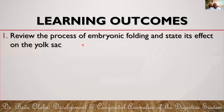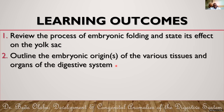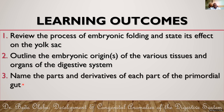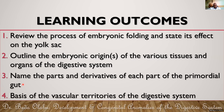Our learning outcomes for this class are: to review the process of embryonic folding and state its effect on the yolk sac; to state the embryonic origins of the different tissues and organs of the digestive system; to look at the specific parts of the primordial gut and the derivatives of each part; and lastly to examine the vascular territories of the digestive system from an embryological point of view.